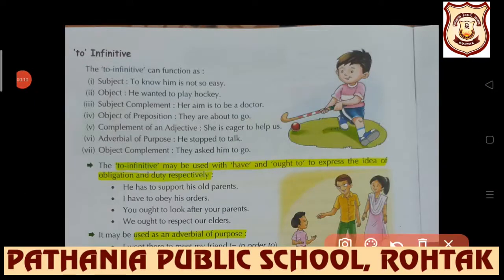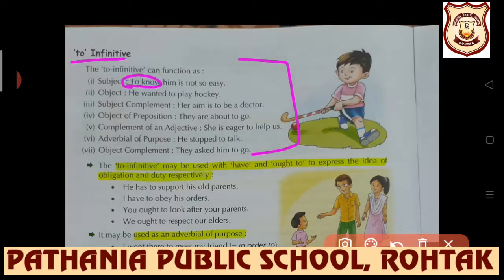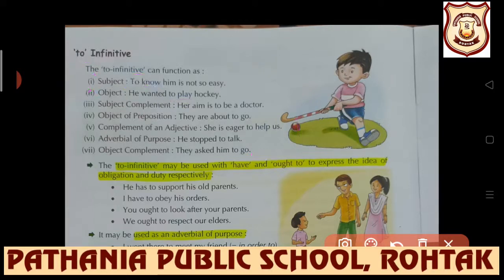Let's go further and read about to-infinitives. To-infinitive means 'to' plus first form of the verb. These are the uses of to-infinitives. First, as a subject: 'To know him is not easy' - 'to know' has been used here as the subject. As an object: 'He wanted to play.' As a subject complement: 'Her aim is to be a doctor.' For subject complement also, to-infinitives can be used.